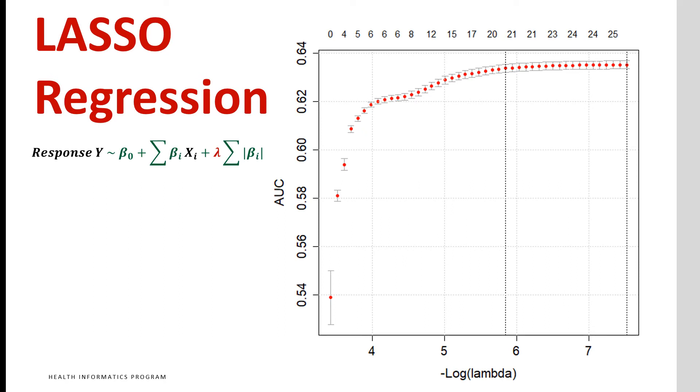Here we see an example of how changes in lambda affect the cross-validated accuracy of predictions shown as area under the curve, or AUC, on the y-axis. The x-axis shows minus log of lambda. Log of lambda is negative, so minus log of lambda makes it a positive number. As lambda gets larger, we have more accurate models with fewer predictors in them. More accurate and more parsimonious.